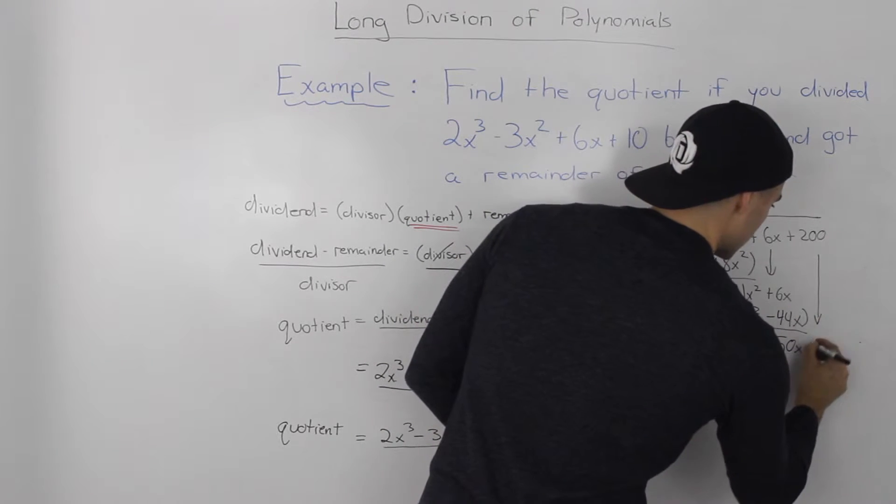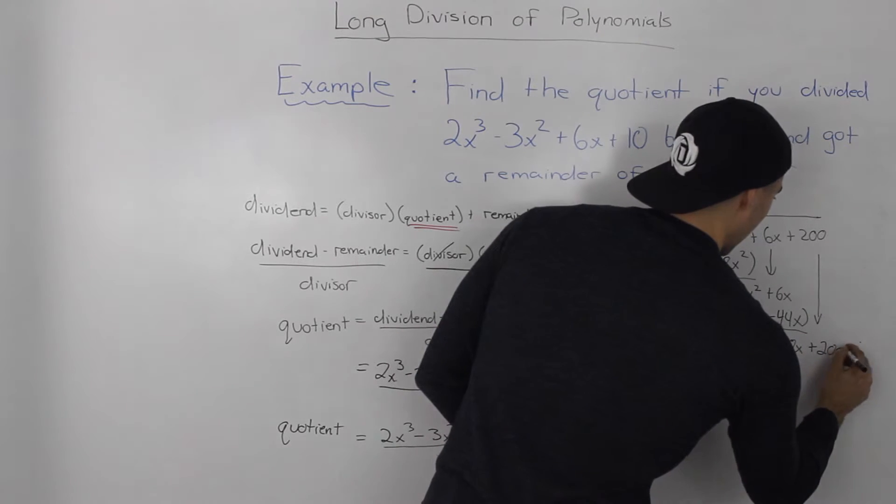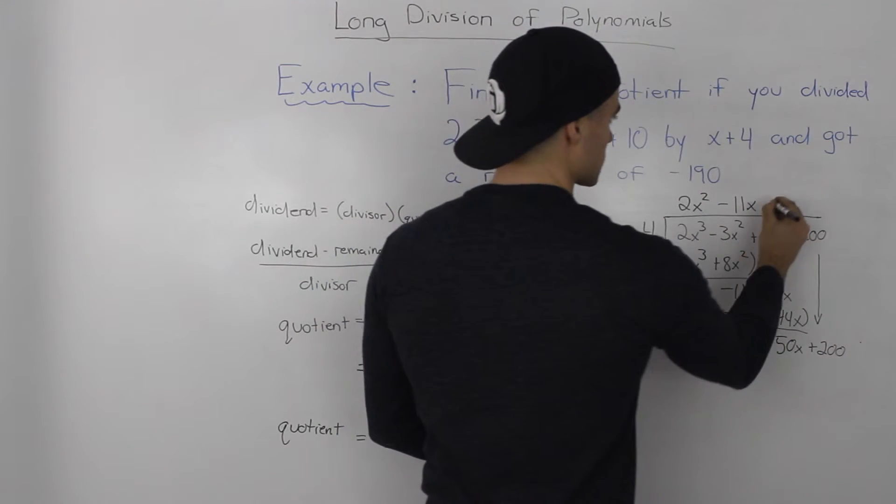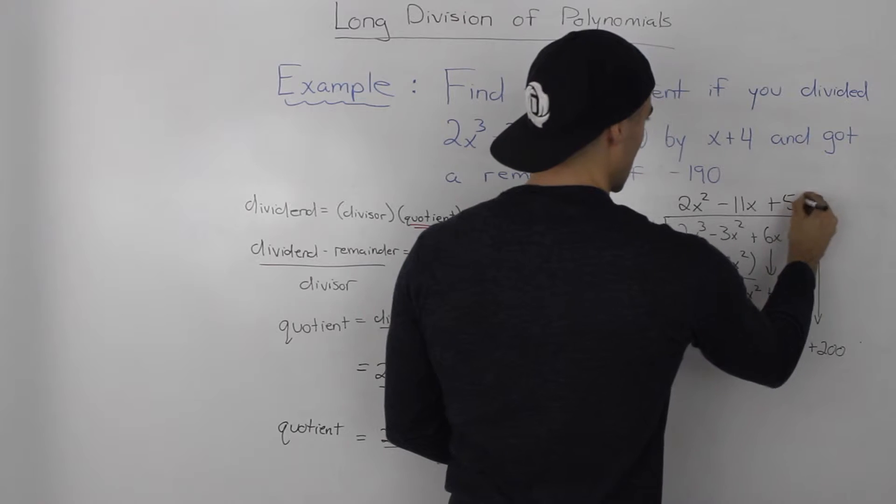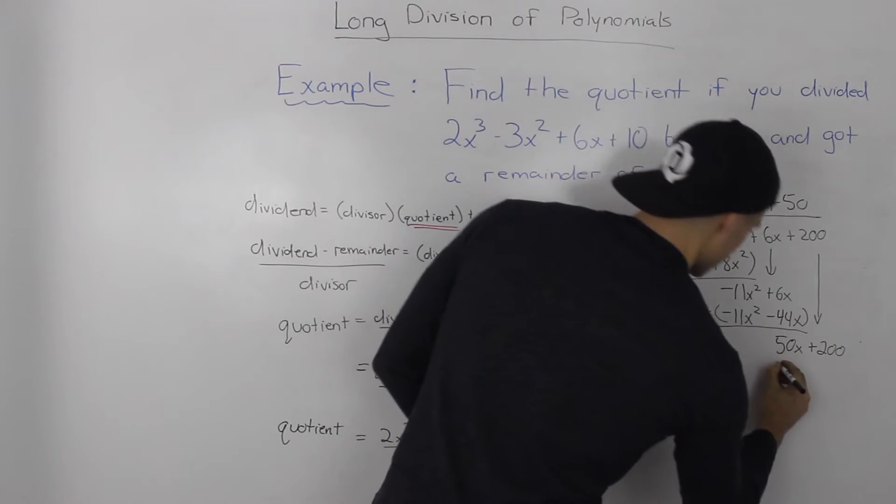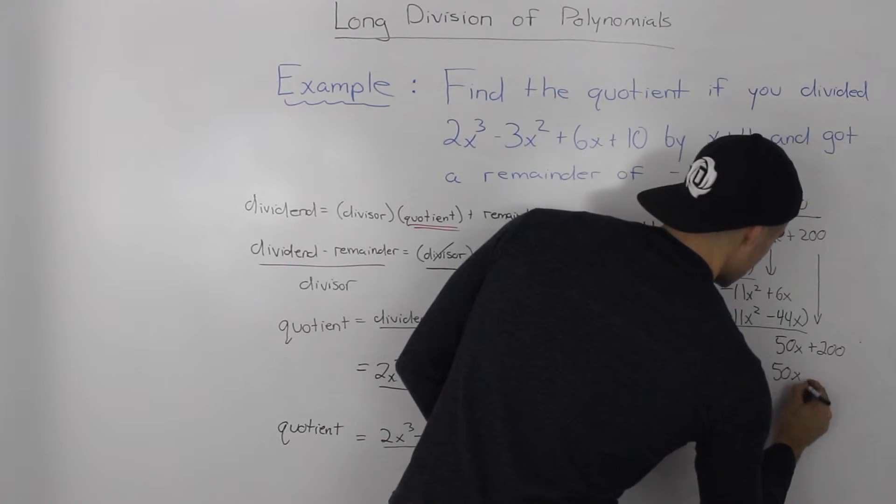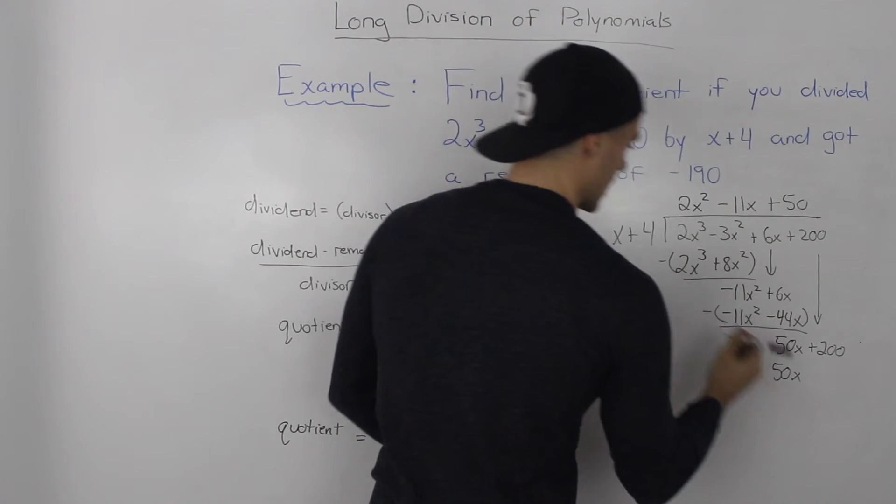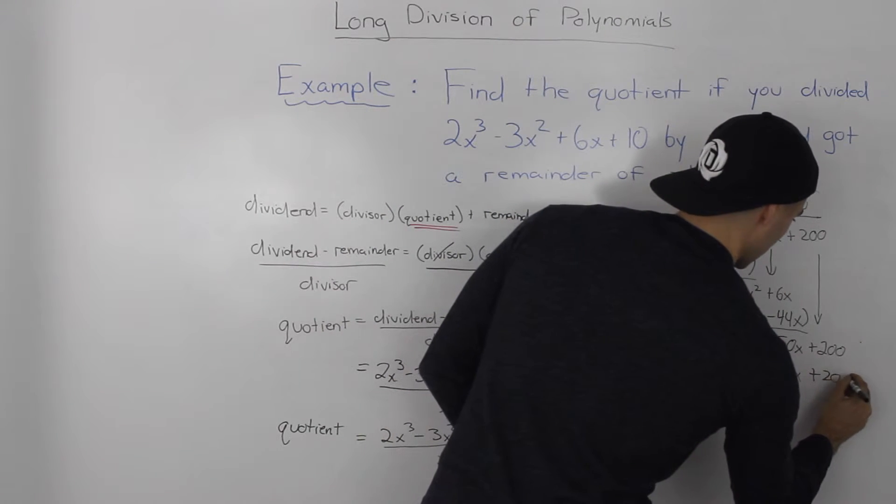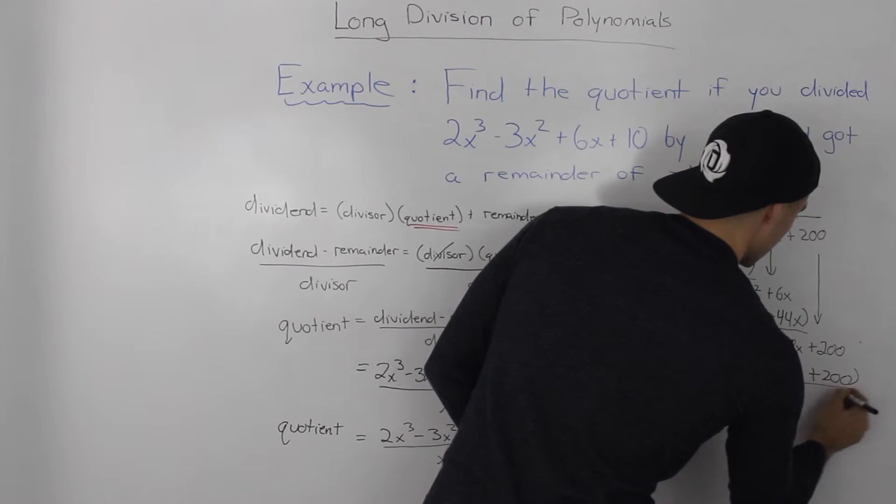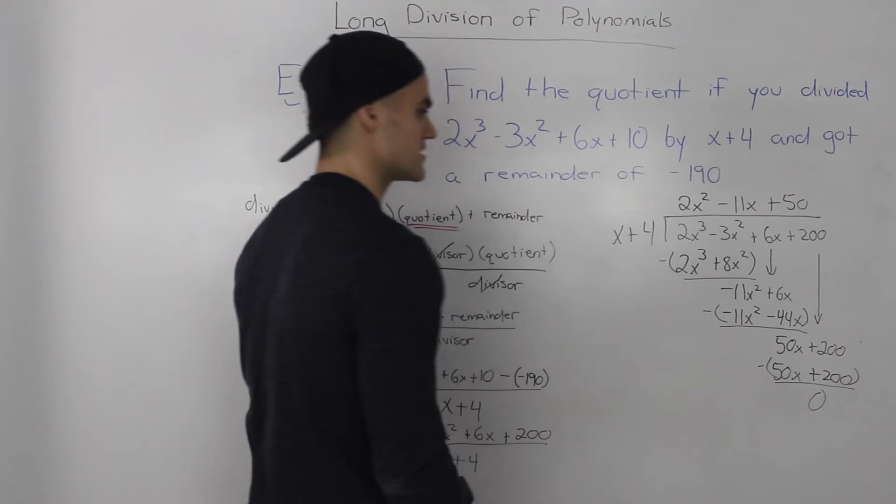Bring the 200 down. How many times does x go into 50x? It goes 50 times. 50 times x is 50x, and 50 times 4 is 200. When we minus both of these expressions, we get a remainder of 0.